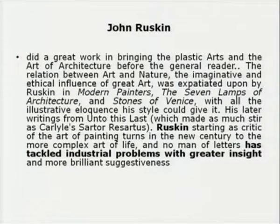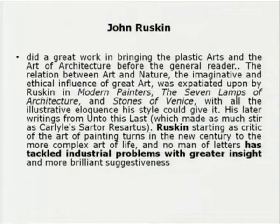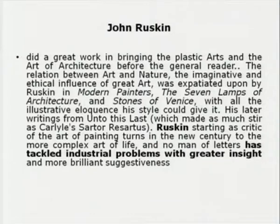We come to John Ruskin, who had influenced so many writers in his time and the trend in looking at life and art in a different way. He did a great job in bringing the plastic arts and the art of architecture before the general reader. We see another current coming in from the pre-Raphaelites. Ruskin talks about painting and about the exchanges between the visual and the verbal and the relation between art and nature. The imaginative and ethical influence of great art was expounded by Ruskin in his famous Modern Painters, then The Seven Lamps of Architecture and The Stones of Venice. His later writings, Unto This Last — you will remember that this was a text which influenced Gandhi a lot.